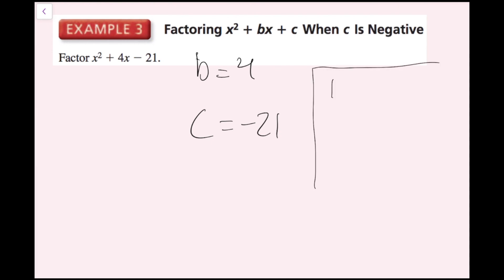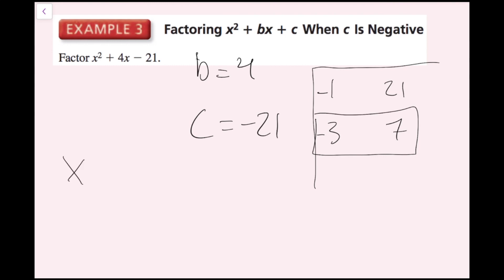I'll write our factor pairs, ignoring signs first: 1 and 21, and 3 and 7. Because my b value is positive and one number must be negative, the number with the larger absolute value is positive and the smaller is negative. So 21 is positive and 1 is negative, and 7 is positive and 3 is negative. 7 plus negative 3 equals 4 — that works. 21 plus negative 1 would be 20, which is not 4. So our factored form is x minus 3 times x plus 7.